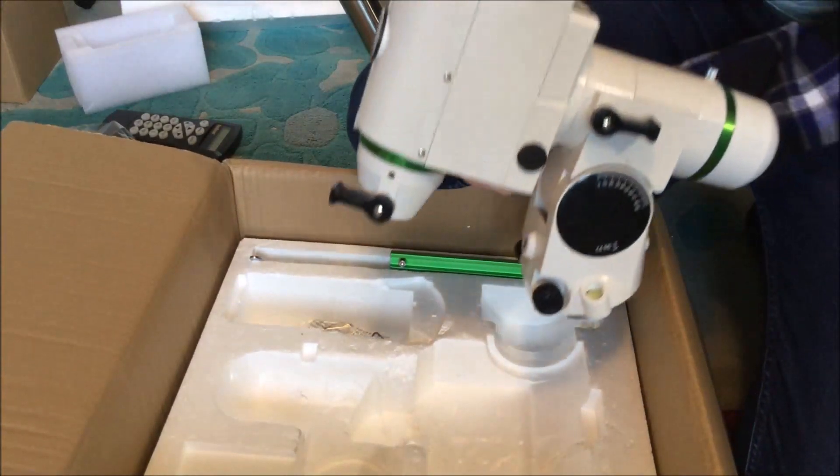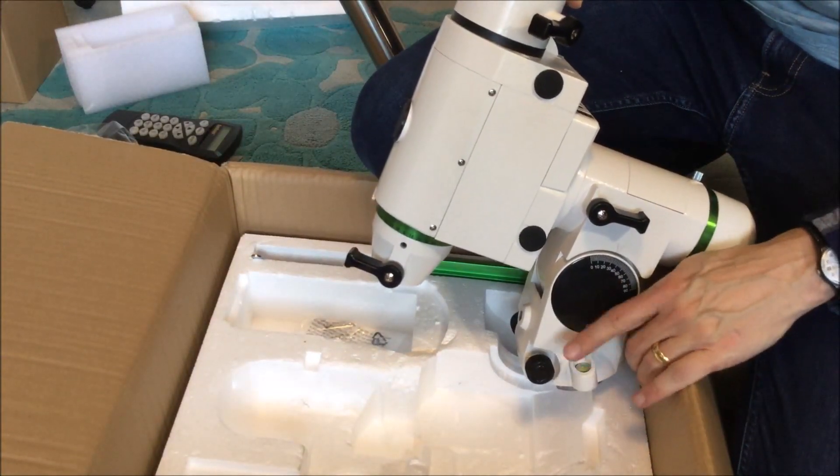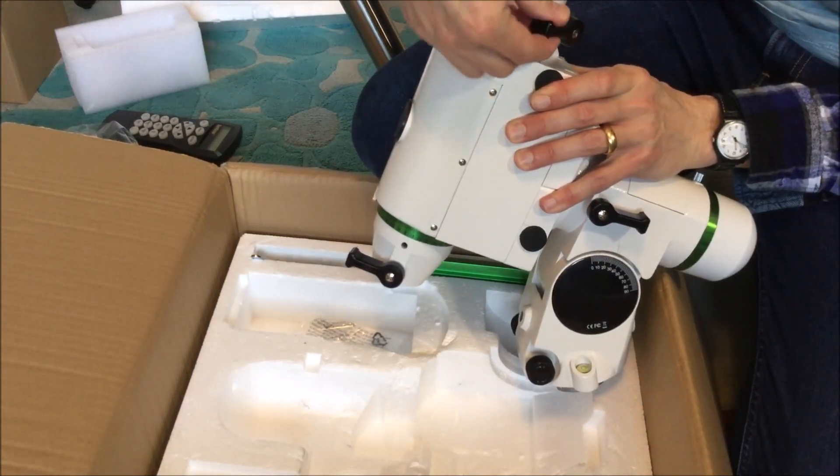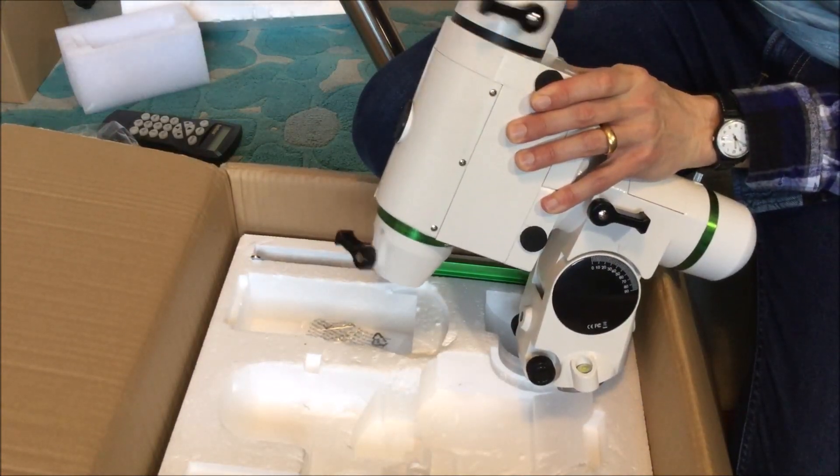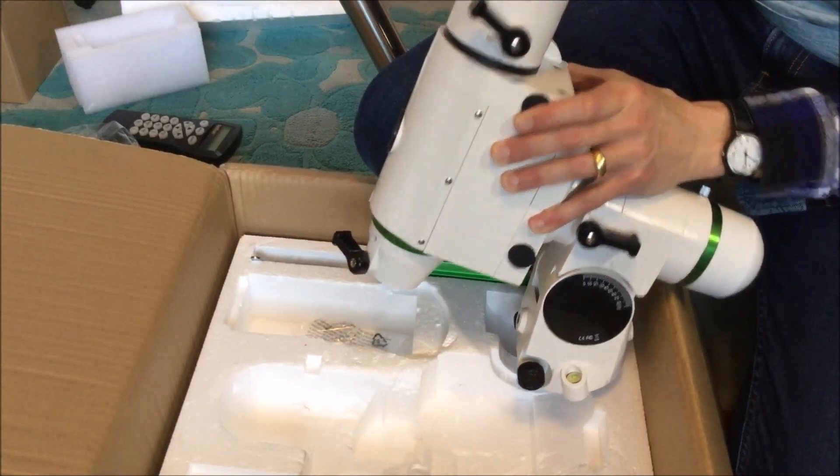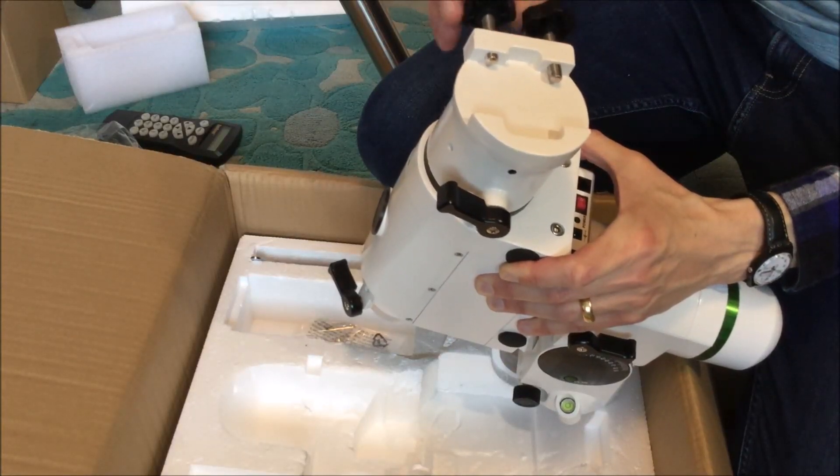We can also see that there is a bubble level here at the bottom of the mount and that the declination axis has another clamp and that the dovetail is going to be secured by two bolts.